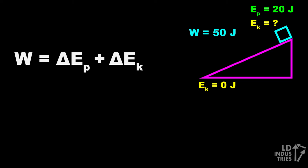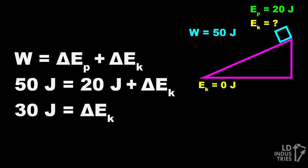Let's substitute into our formula and see what we get. The work is 50 joules, since that was the energy we added to the system. The gravitational potential energy change is 20, started at 0 and it ended at 20. And that means we can solve for the change in kinetic energy, which in this case will be 30 joules.